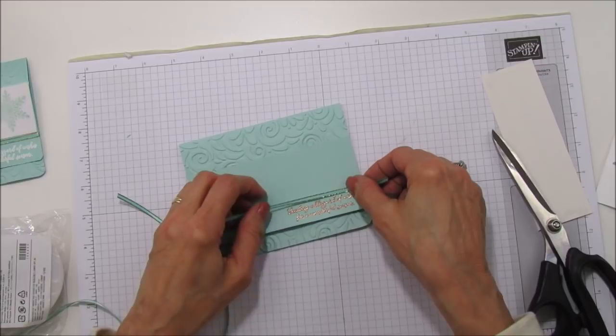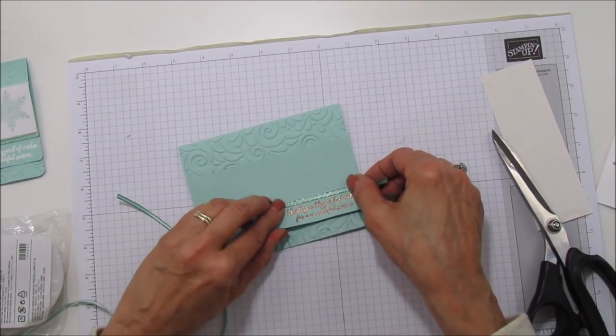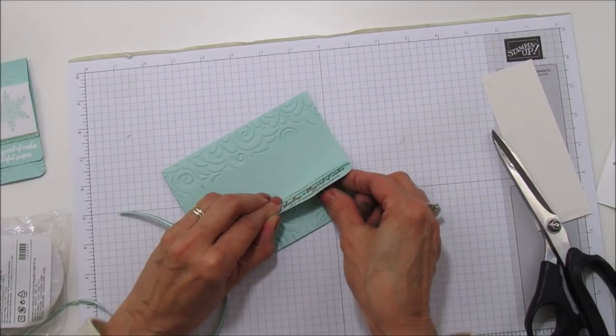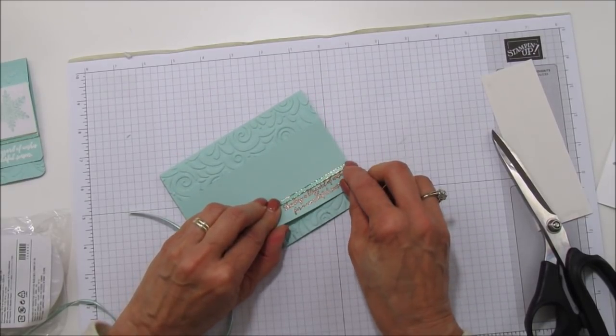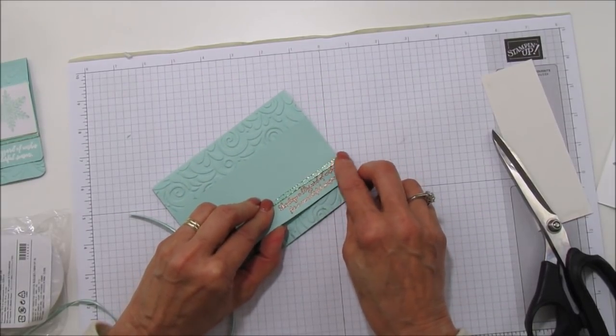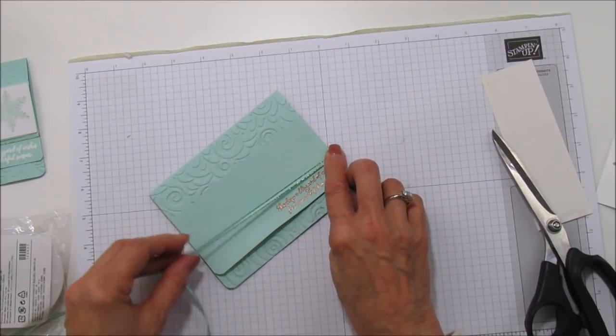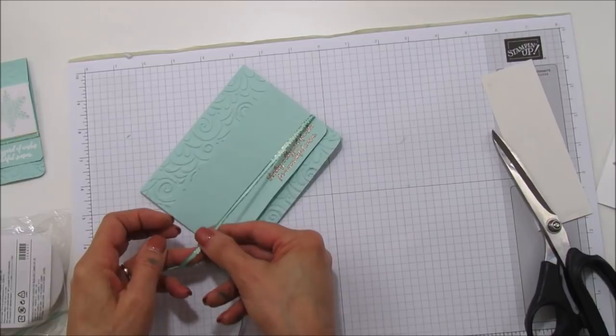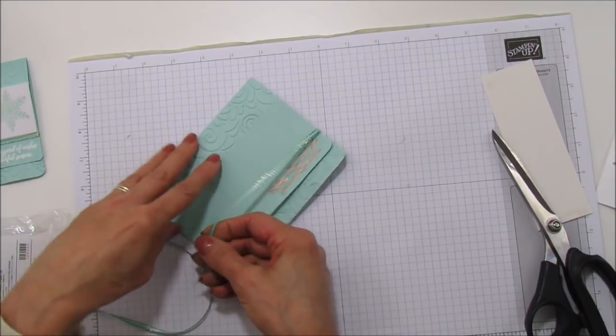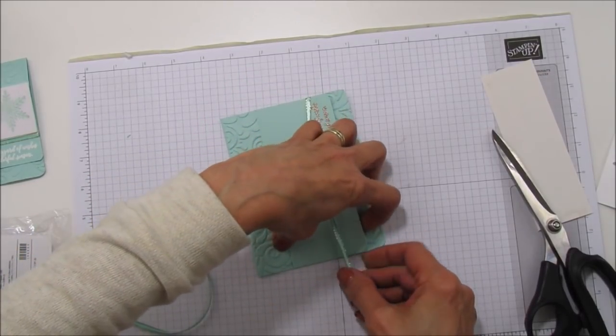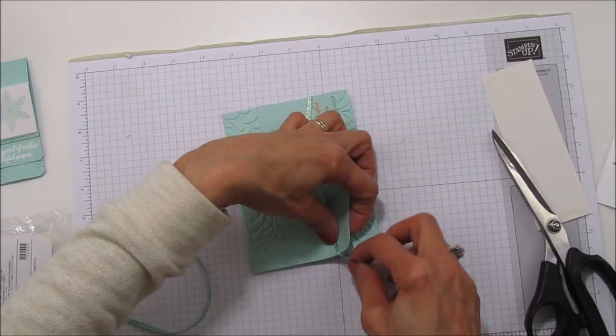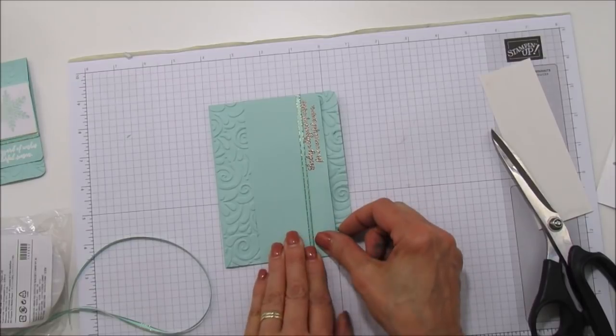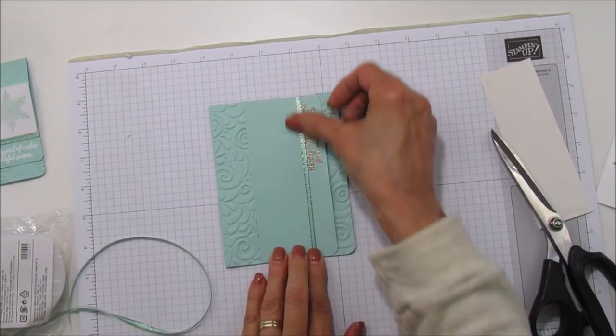And I'm going to just set that down here. And I just want it above the sentiment. And I'm going to tuck this under. I may need to add a little bit more adhesive now. And then keep it straight. And then you want to tuck this one under. And keep it flat.